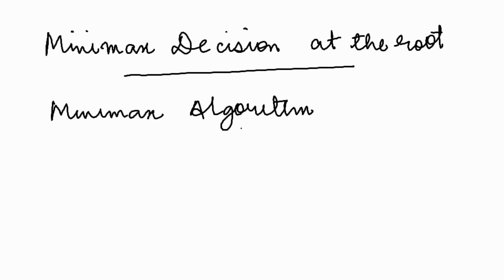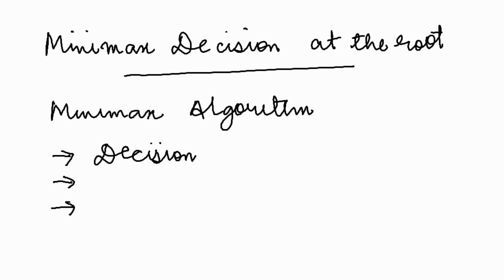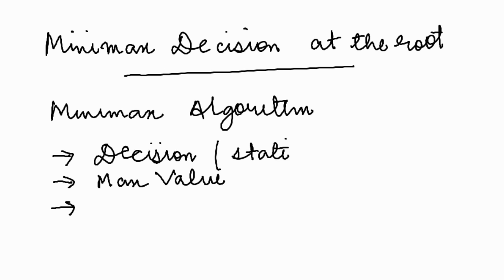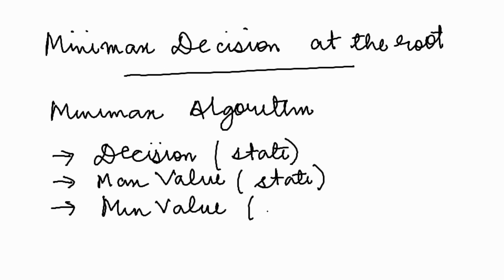To find the Minimax decision, we use the Minimax algorithm, which is a recursive algorithm. It consists of three functions. The first is the decision function, the second is the max-value function, and the third is the min-value function. All three functions take as input the state of that particular node.